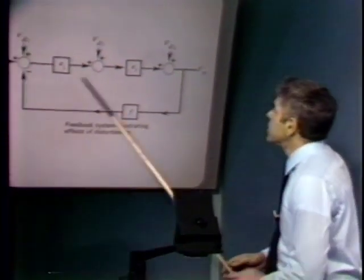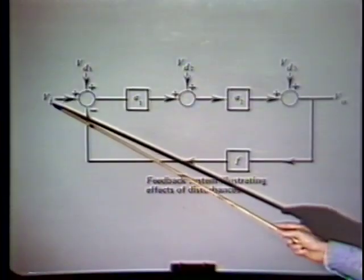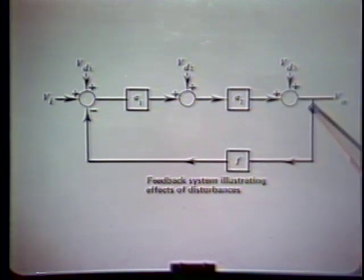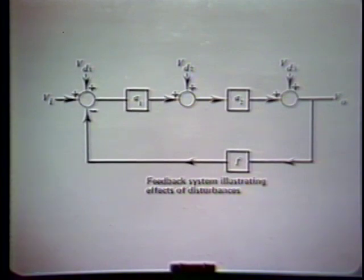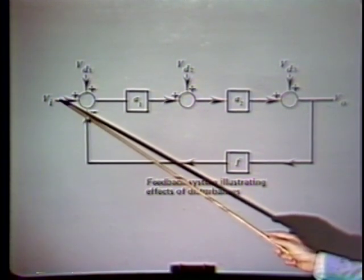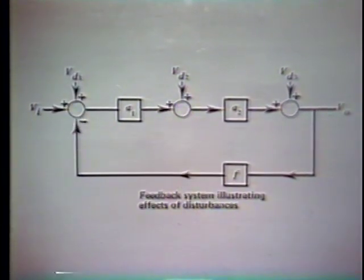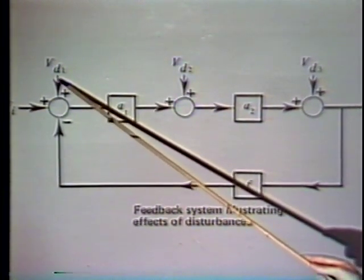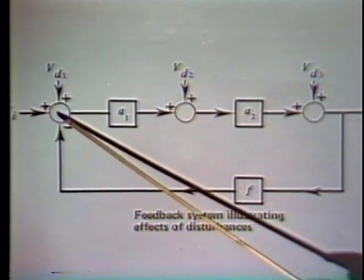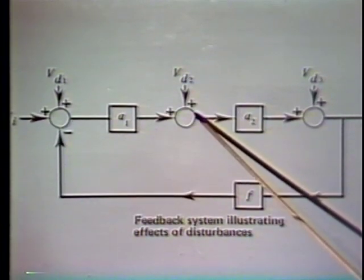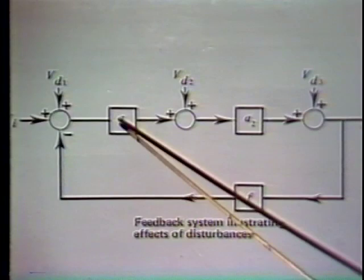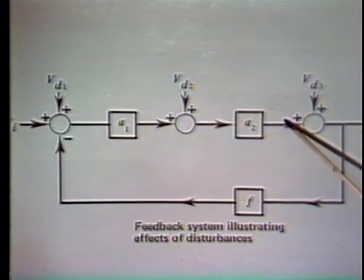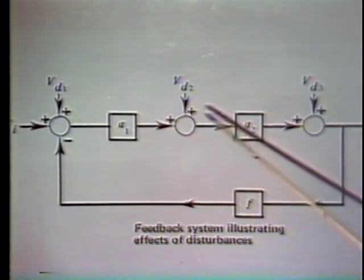Let's consider the system shown here. We have a system with an input, an output, a feedback transfer function that monitors the output and applies it back to the summing point. In addition to our input, we have three disturbances injected at various points in the system. The first disturbance is injected at the same point as the input signal. The second disturbance is injected after some gain A1 in the forward path, and the third disturbance is injected after another amount of gain has been achieved.